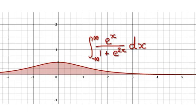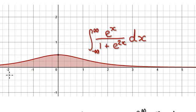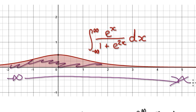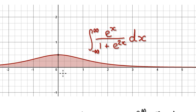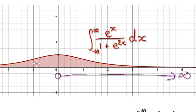Following on from the previous video, I asked you to work out this area from negative infinity all the way to positive infinity. I also showed you in the previous video that this here is an even function. So because we know it's an even function, we can just integrate it from 0 all the way to infinity and then multiply by 2.